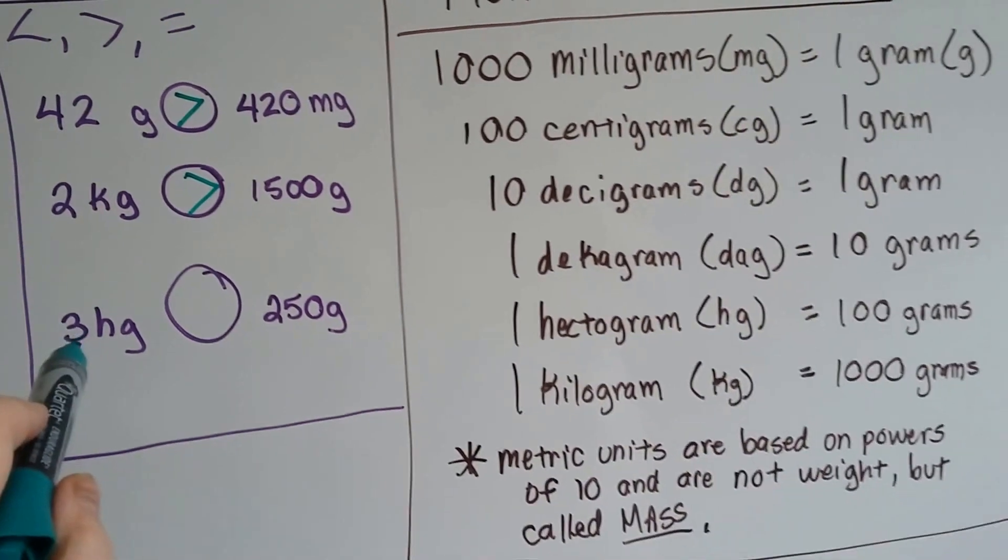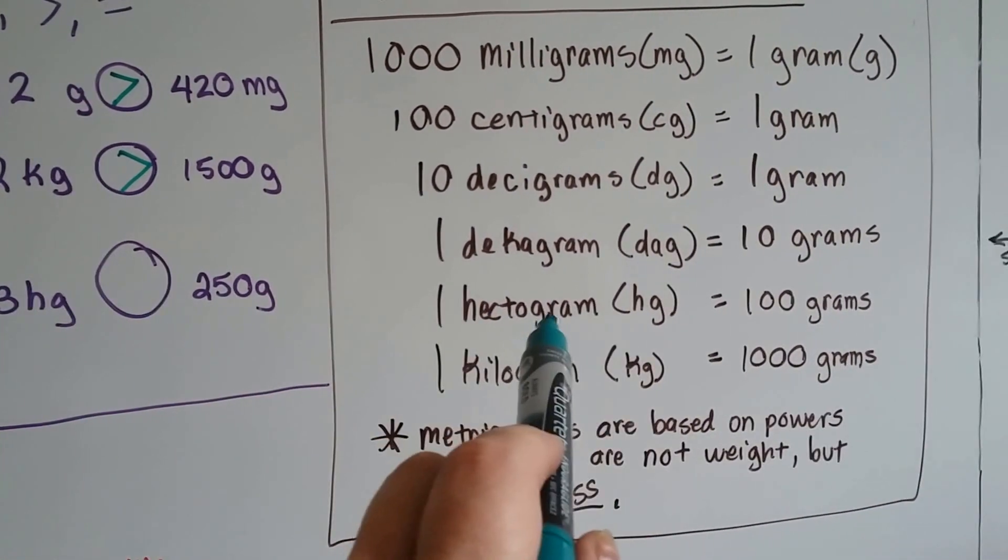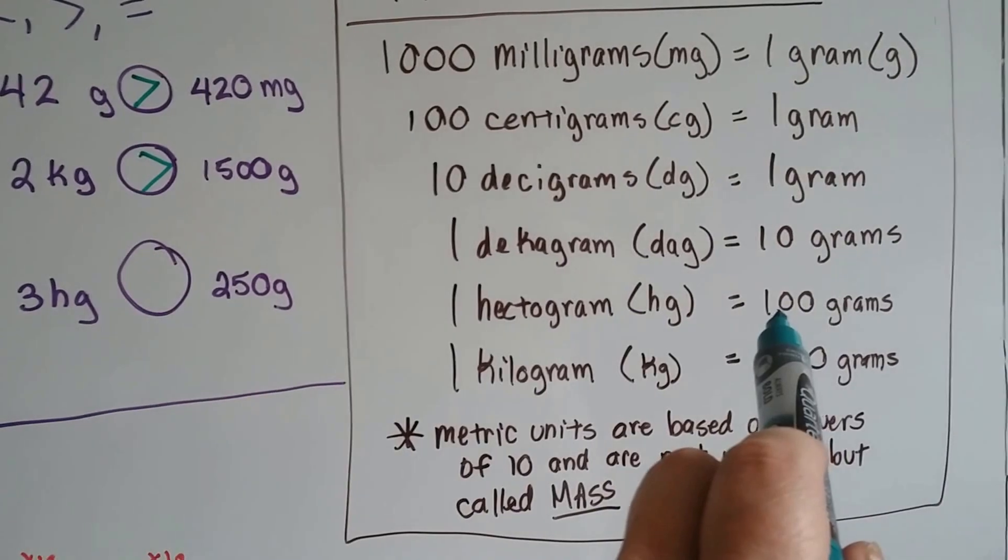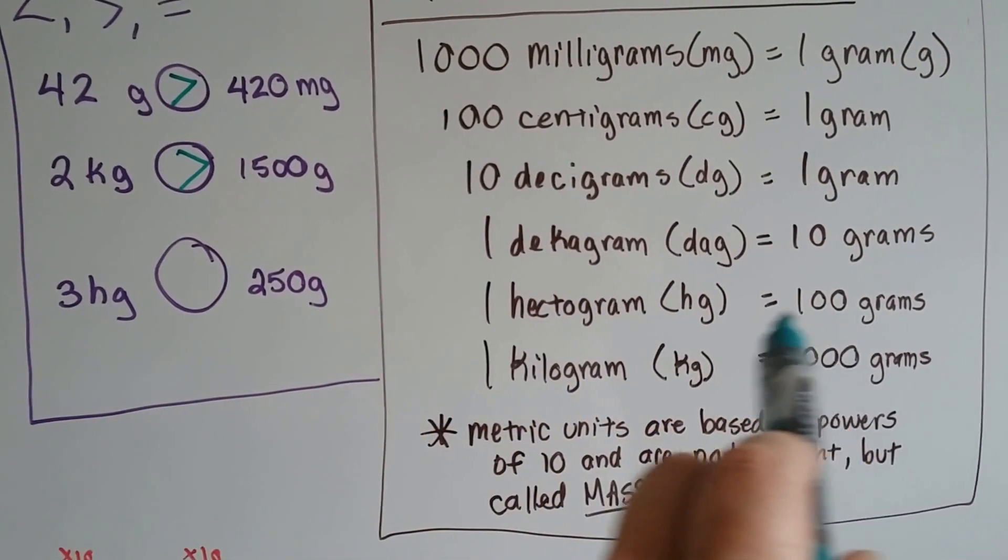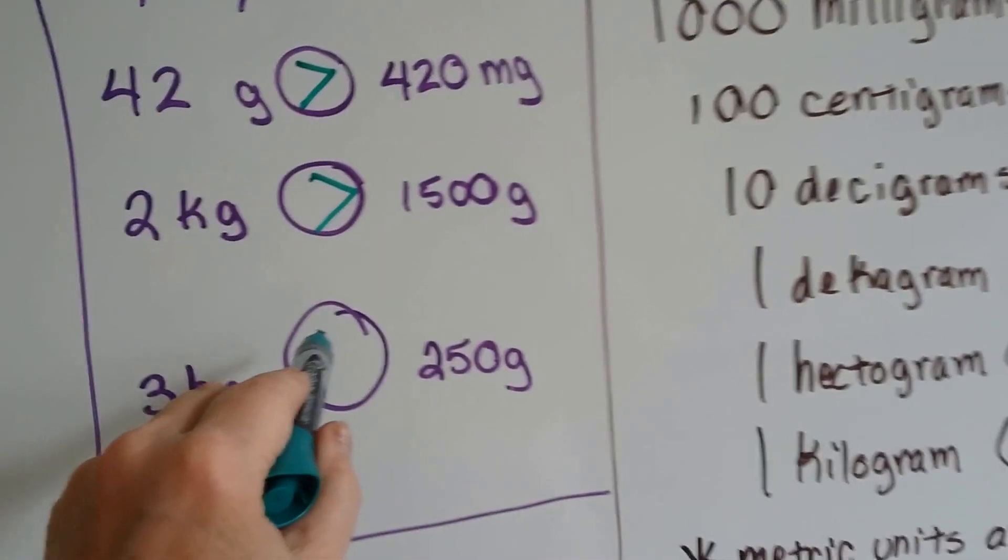Which is bigger? 3 hectograms or 250 grams? Well, 1 hectogram is 100 grams. So 3 hectograms would be 300 grams. So the 3 hectograms were bigger, weren't they?